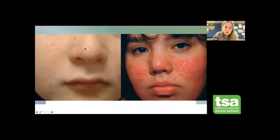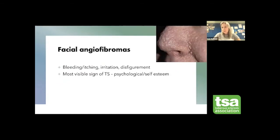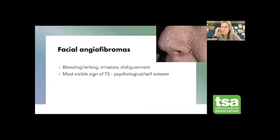They start as slightly raised bumps on the cheek, then become redder and thicker over time. The problems they cause include bleeding — they can be itchy, scratched off, and cause a trickle of blood, which can be very annoying. They can be irritating and unfortunately sometimes disfiguring. Of all the skin signs of TS they are the most visible ones, because they're on the face. Because they impact how we communicate, they can affect self-esteem, which is why we treat them most aggressively.